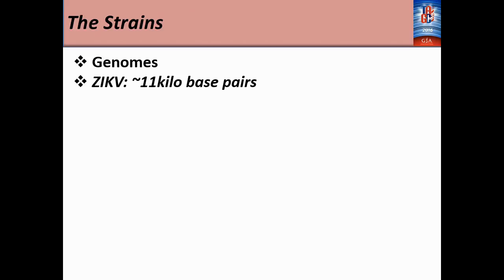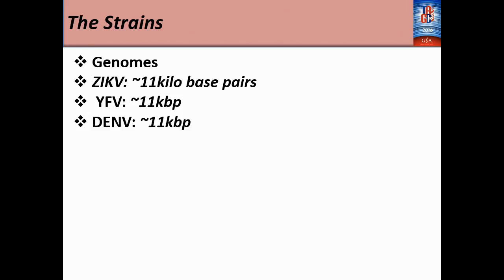The strains we are comparing — the genomes for most of these viruses are about 11,000 base pairs, that's the full-length nucleotide sequence. The Zika virus is approximately 11,000 base pairs, the yellow fever virus approximately 11,000 base pairs, the dengue virus approximately 11,000 base pairs, and the chikungunya is approximately 12,000 base pairs.